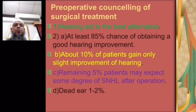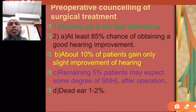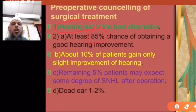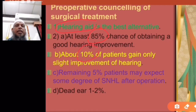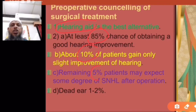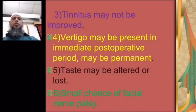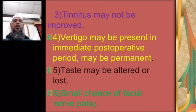Preoperative counseling for surgical treatment: hearing aid is the best alternative. At least 85% of patients have a good chance of hearing improvement; 10% may gain only slight improvement; the remaining 5% may experience some degree of hearing loss after the operation; and dead ear occurs in 1–2% of cases. Tinnitus may not improve. Vertigo may be present in the immediate postoperative period and may be permanent. Taste may be altered or lost, and there is a small chance of facial nerve palsy.